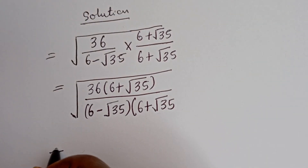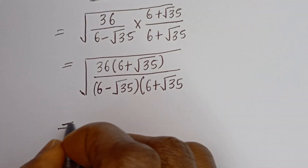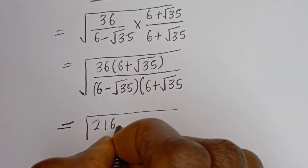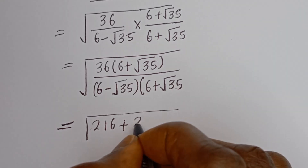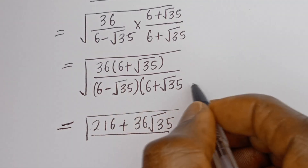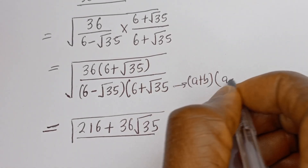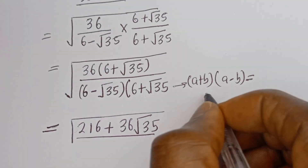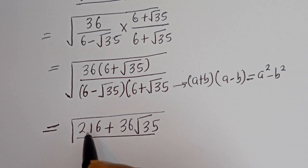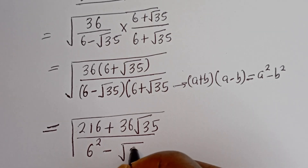The numerator becomes square root of 36 multiplied by 6 plus square root of 35, which gives 216 plus 36 root 35. The denominator is in the form of A plus B bracket A minus B, which equals A squared minus B squared.